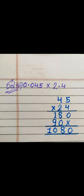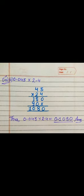Now let's solve the next question. It is 0.045 into 2.4. Again we will multiply the numbers without decimal: 45 into 24, and we get 1,080. As you are seeing in the question, we have 3 decimal places in the first number and 1 decimal place in the second — total 4. That means we will mark the decimal after 4 digits, so it will be 0.1080.